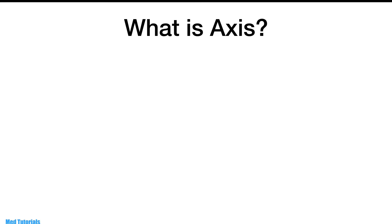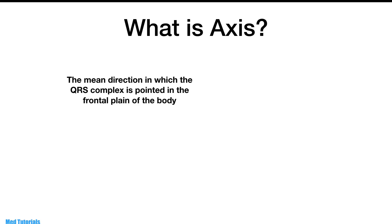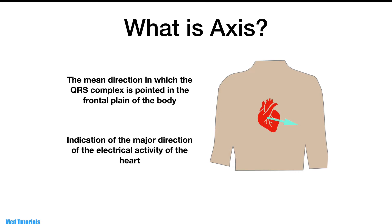So what exactly is the axis? It is the mean direction in which the QRS complex is pointing to in the frontal plane of the body. It is an indication of the overall direction of the electrical activity of the heart. Since it's in the frontal or vertical plane, we need to look at only the limb leads to determine the axis of the heart.